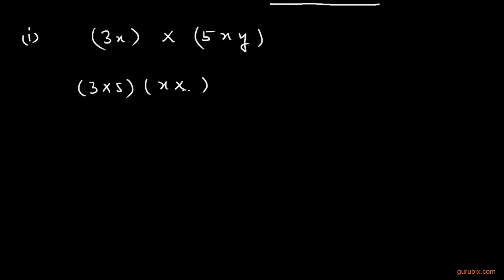This means x into x, and y is separate. So if we multiply 5 with 3 we get 15, and if we multiply x into x, then powers get added. So 1 plus 1 means 2, which means x square. So the result is 15x²y. This is the multiplication of 3x and 5xy.